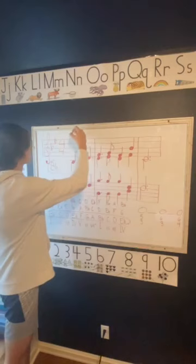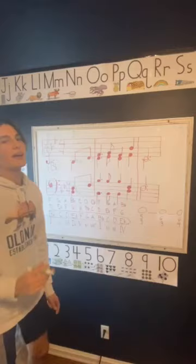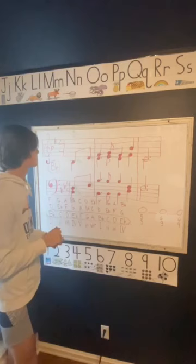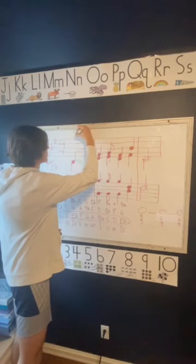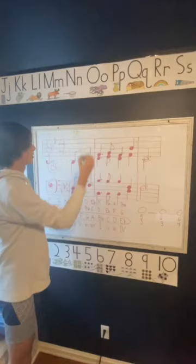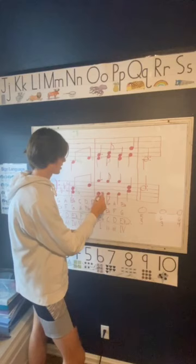Now we know that if it starts on B-flat, it's going to be a one — a Roman numeral I. Our next step is to find the inversion, which I call the 'fraction.' The B-flat is on the bottom, and because it's the root on the bottom it's going to be a five-three. So we've figured out this is a I in five-three position.